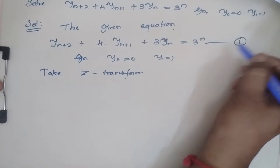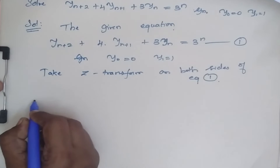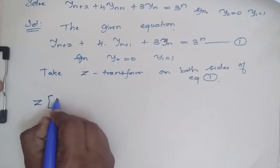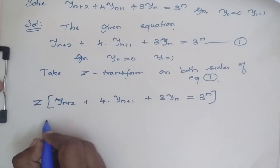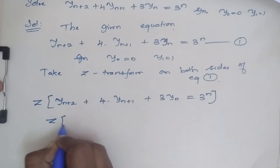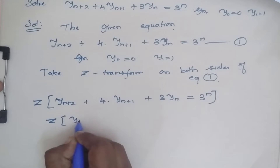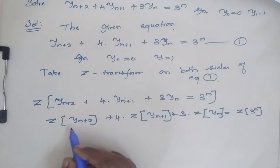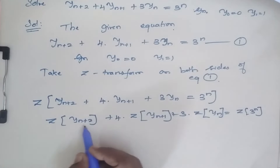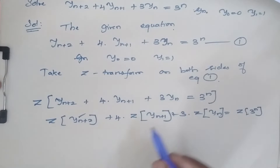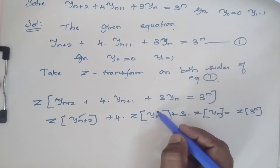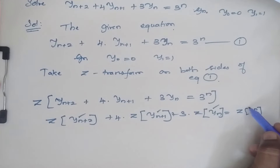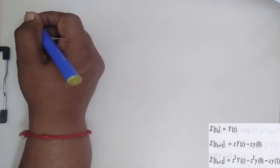Let me number this equation as 1. Now I am going to substitute the formulas for Z{y(n+2)}, Z{y(n+1)}, Z{y(n)}, and Z{3^n}.